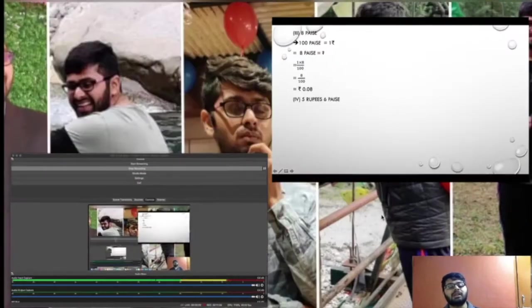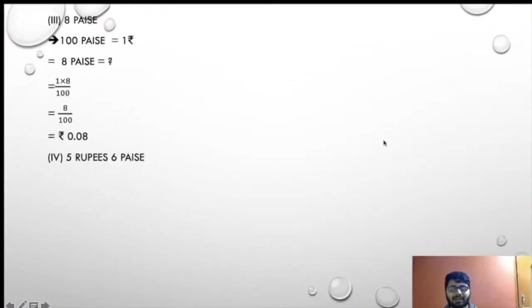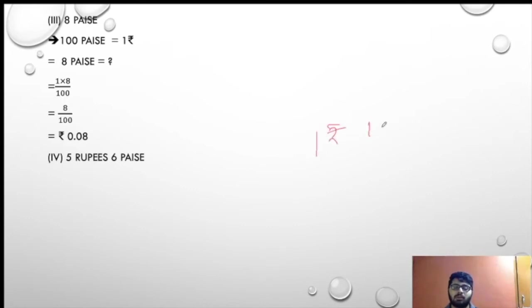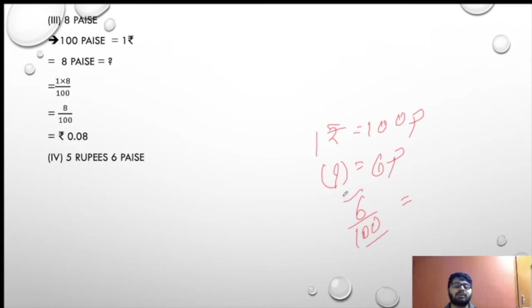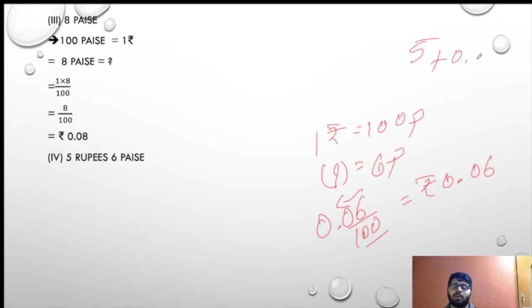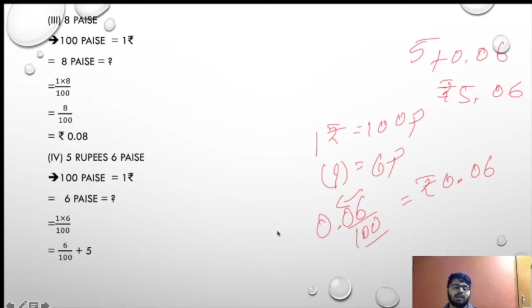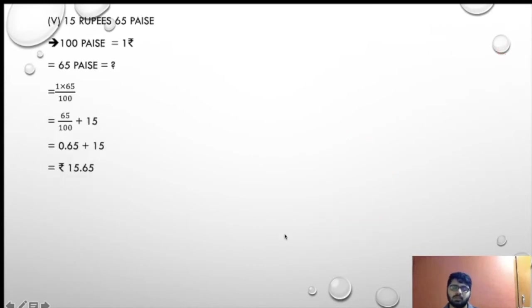Next: 5 rupees and 6 paise — we will solve it the same way. Rupees are given. 1 rupee equals 100 paise, so 6 paise equals 6 upon 100. That is 0.06 rupees. Now we add this to 5, so that is 5.06 rupees.